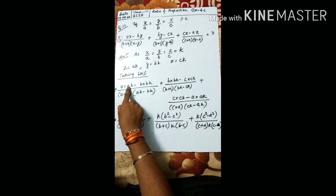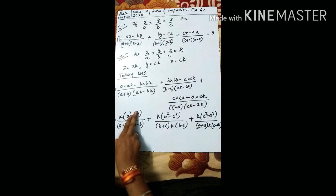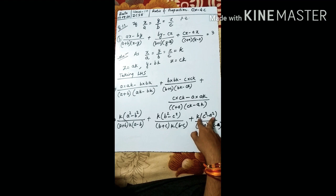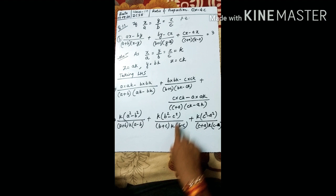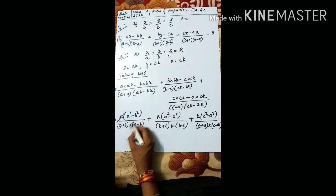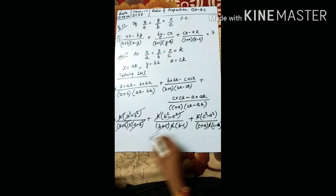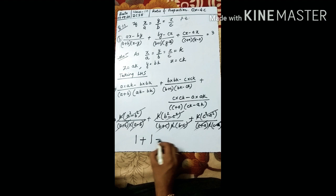Taking k common from numerator terms: a²k - b²k = k(a² - b²); similarly k(b² - c²) and k(c² - a²). In the denominator, take k common from each bracket too. The k's cancel. Then a² - b² = (a+b)(a-b), and these factors cancel with the denominator terms. Each fraction gives 1, so the sum equals 1 + 1 + 1 = 3. Hence proved.